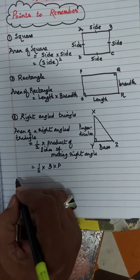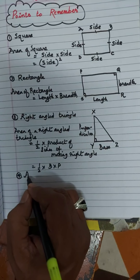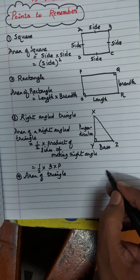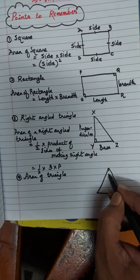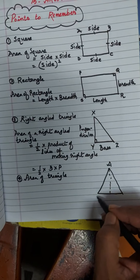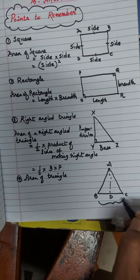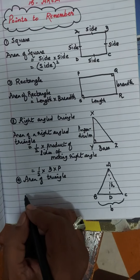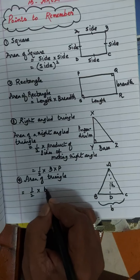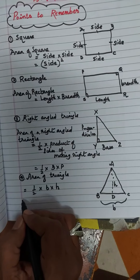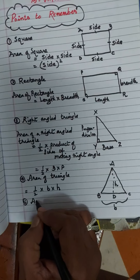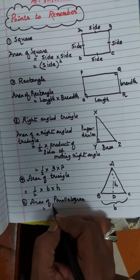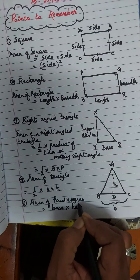The fourth one is area of a triangle. Draw a triangle — suppose this is triangle ABC, and if we draw a perpendicular from A to D on BC. BC is nothing but the base, and AD is the perpendicular, so it is the height. Area of a triangle is equal to 1/2 into base into height. This is our fourth formula. And the fifth one: area of a parallelogram. Area of parallelogram and area of rectangle are one and the same — area of a parallelogram is equal to base into height. These are the basics of the chapter.